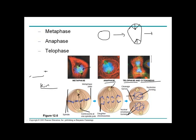Along with telophase, cytokinesis begins — the cytoplasm starts to divide by forming a cleavage furrow. In animal cells, the cell membrane is pinched inward on two opposite sides; these furrows move toward each other and finally meet, dividing the cytoplasm into two daughter cells.